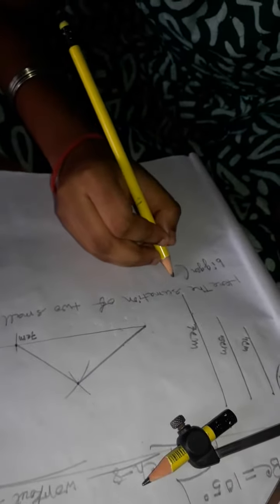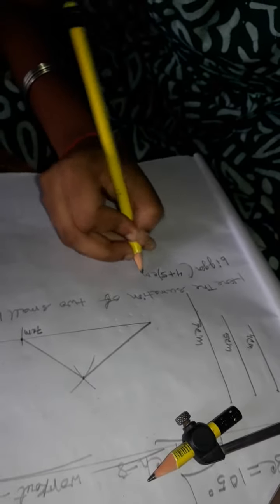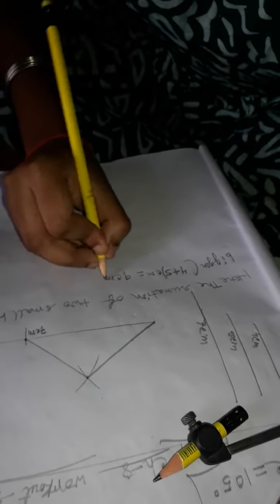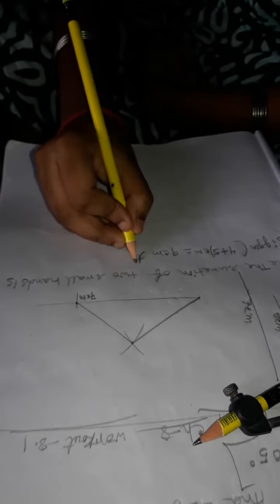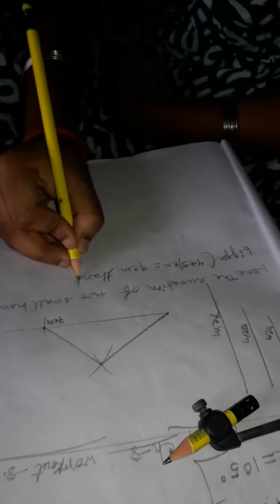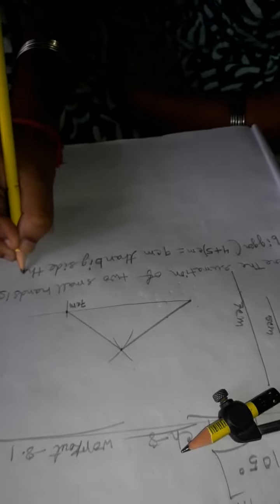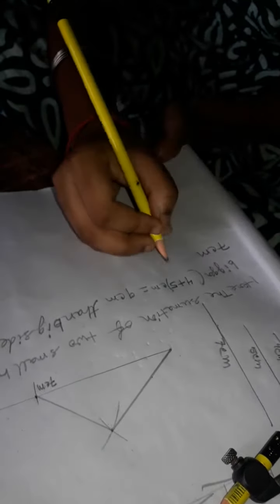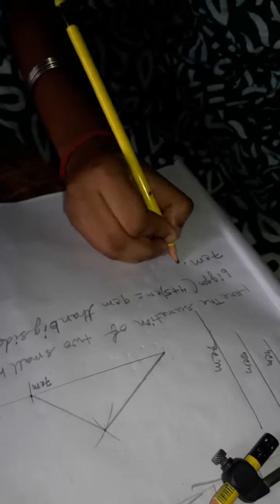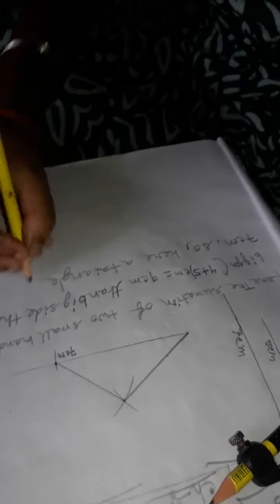bigger. So, 4 plus 5 cm is equal to 9 cm, bigger than the big side, that is 7 cm. So, here a triangle can be constructed. Yes. Triangle can be constructed. This is the answer and do the next one.